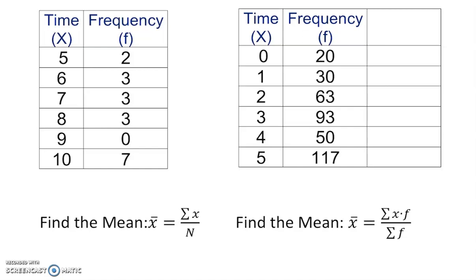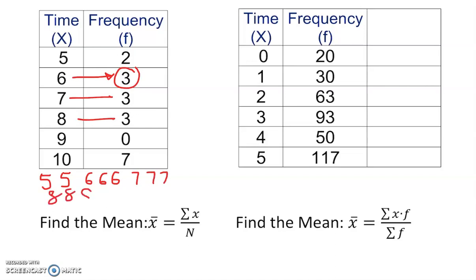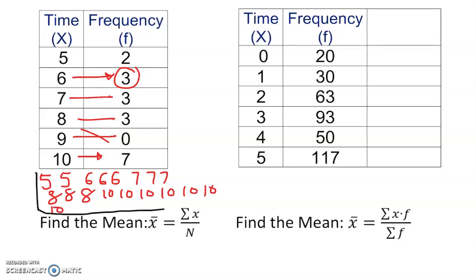For example one, five shows up twice, so we write five, five. Six shows up three times: six, six, six. Seven also three times. Eight also three times: eight, eight, eight. Nine: none. Ten shows up seven times — one, two, three, four, five, six, seven. You can extract all of them from the table.